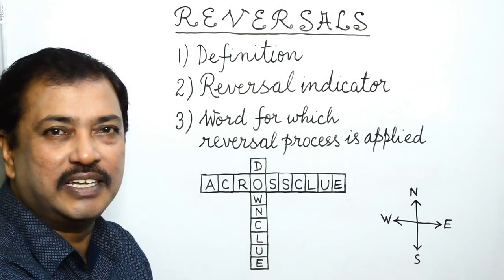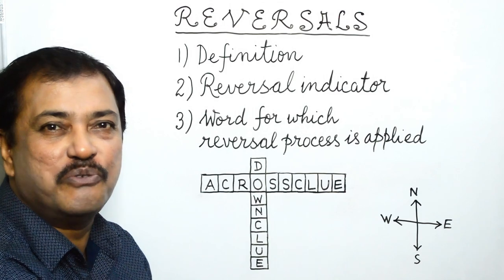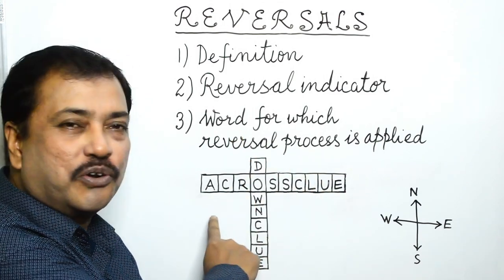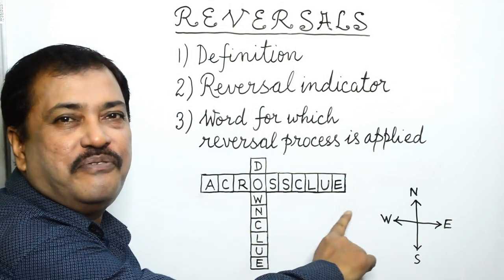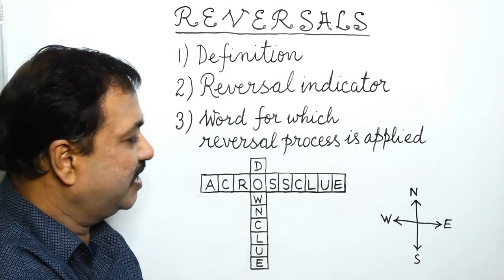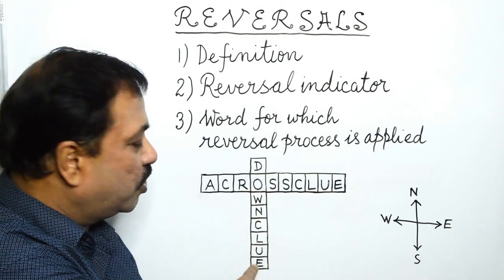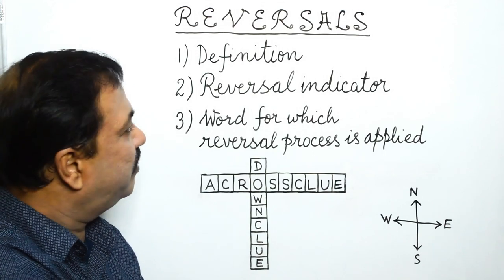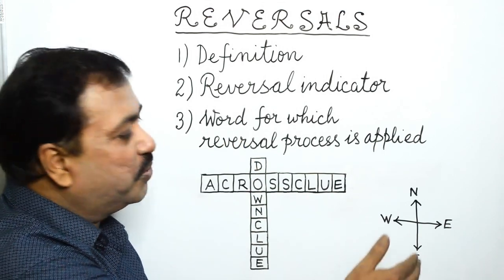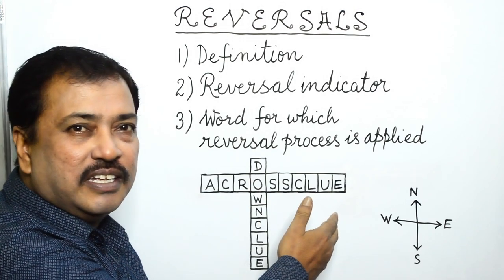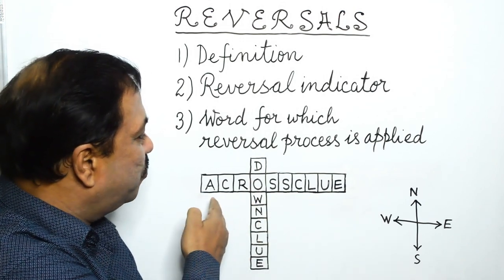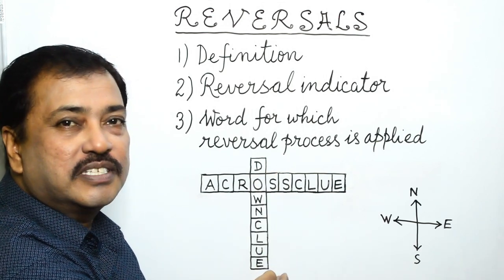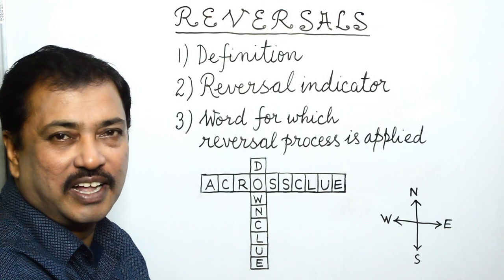Now we know that in cryptic crossword puzzles we have across clues as well as down clues. In across clues we write from left to right and in down clues we write from top to bottom. In reversals we have to go backwards from east to west and upwards from south to north and get our answers.